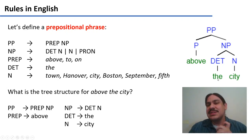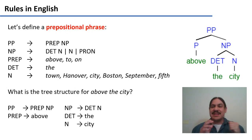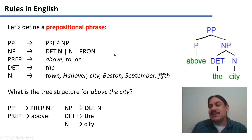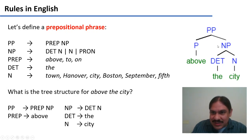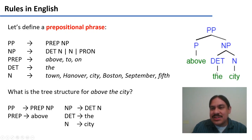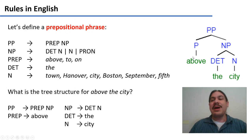Notice that this looks like a tree in that it has branches that keep on extending, and it tells us that there's hierarchical structure to sentences. For example, when you have the word 'above' — above what? The city. The structure that is the sister to the word 'above' tells you what is the argument for this preposition. Above what? The sister — the city.